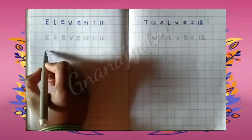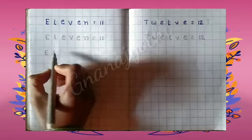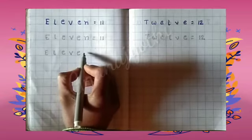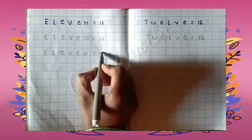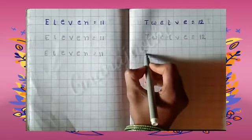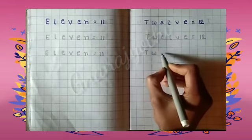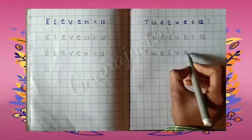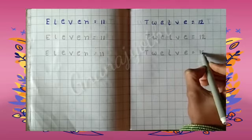Once again write the same spellings. E L E V E N is equals to 11, and T W E L V E is equals to 12.